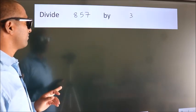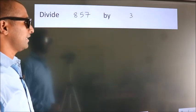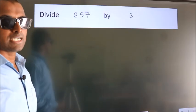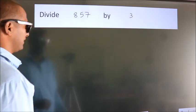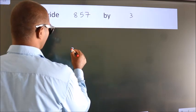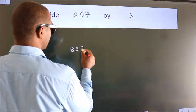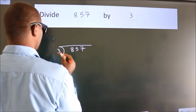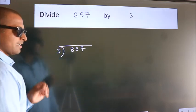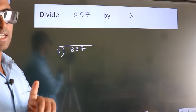Divide 857 by 3. To do this division, we should frame it in this way. 857 here, 3 here. This is your step 1.